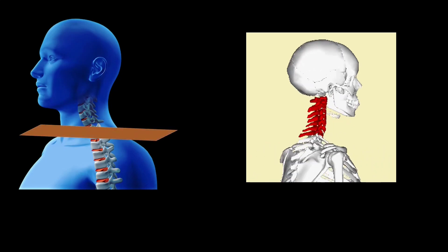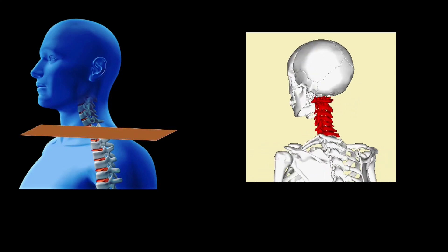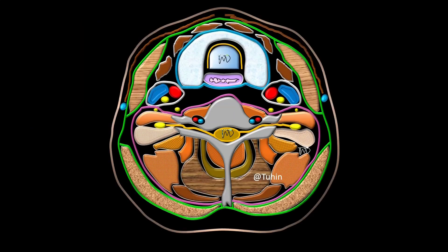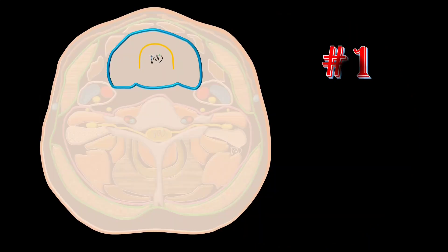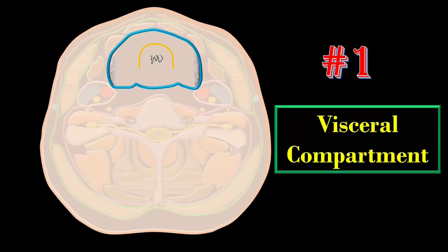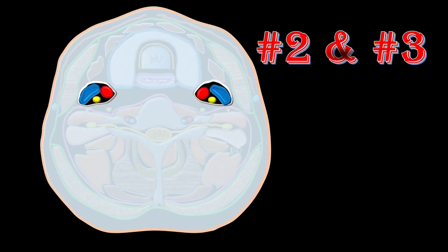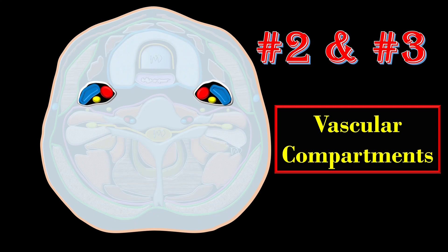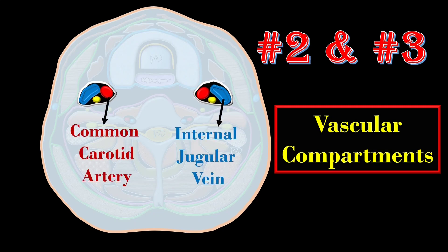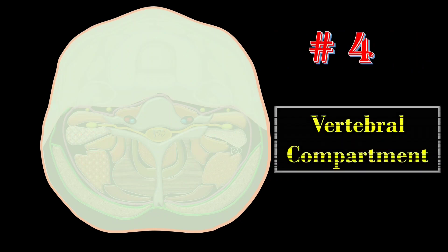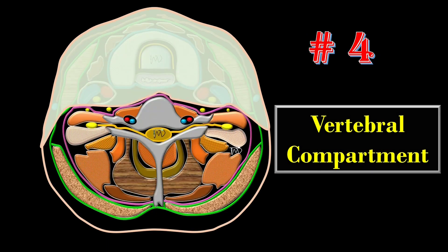Here on the screen, you are seeing the transverse section of the neck at C6 vertebral level or above. We can remember the components of the cervical compartment as four Vs: the visceral compartment containing thyroid gland, trachea, and esophagus; two vascular compartments on each side consisting of common carotid artery and internal jugular vein; and the vertebral compartment consisting of the cervical vertebra and the muscles surrounding it.